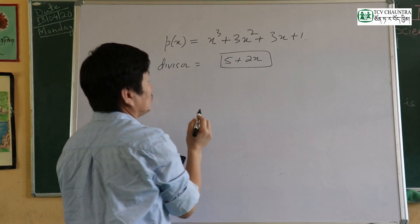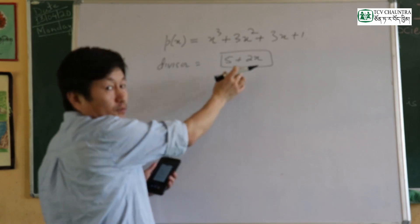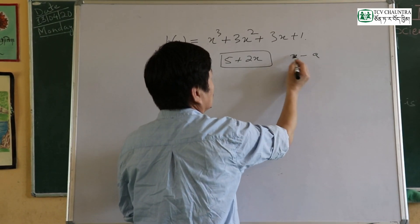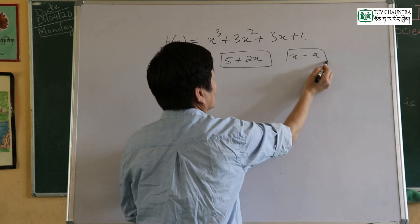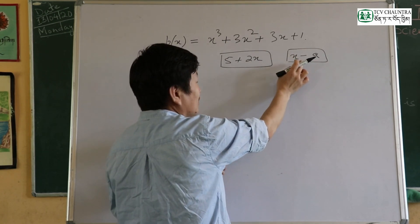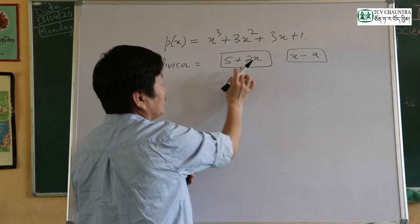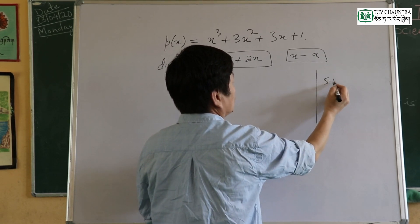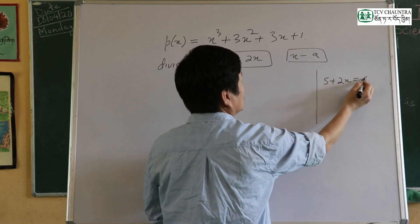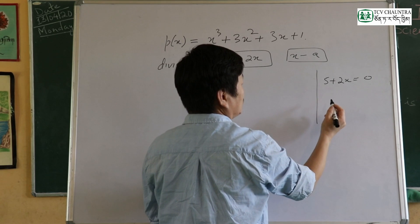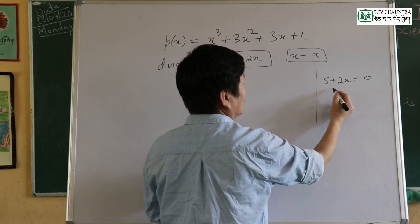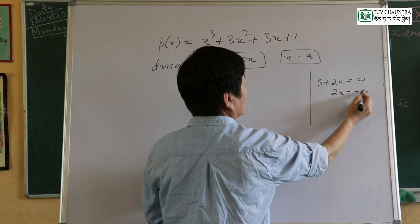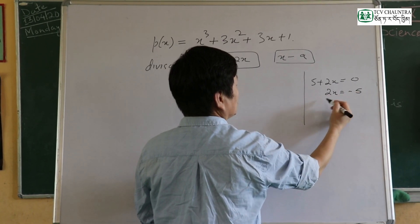The remainder theorem: the divisor is a linear polynomial. The form is x minus a. So 5 plus 2x equals zero, which gives us 2x equals negative 5, dividing both sides by 2.